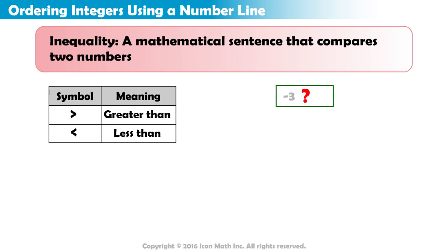The open side of the inequality symbol always faces the larger number. Let's compare the two integers, negative 3 and 0. Which integer is larger?